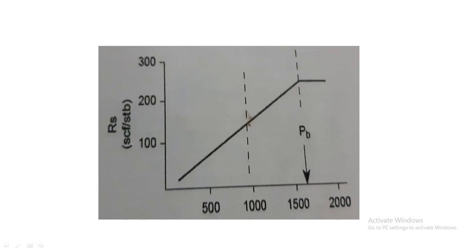Now let us see the graphical representation of gas solubility. The y-axis represents Rs and the x-axis represents the reservoir pressure. Here you can see P sub B, which is the bubble point pressure. The bubble point pressure plays a very important role in the reservoir. As the reservoir pressure decreases and reaches the bubble point pressure, at that particular point the gas will start to evolve from the oil.